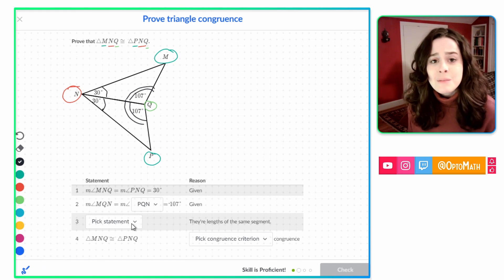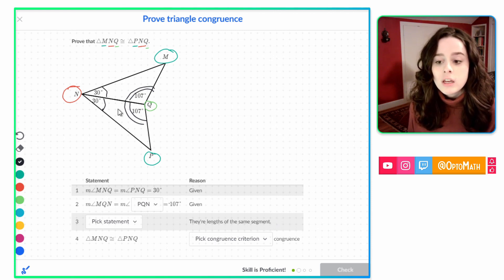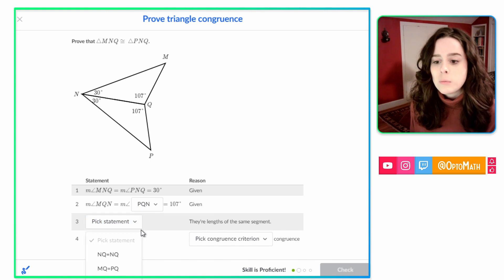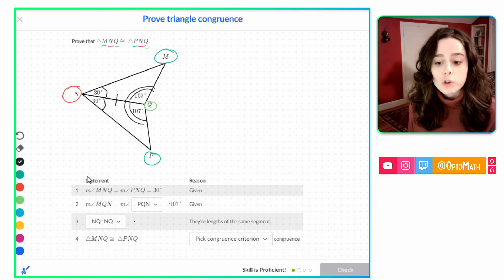And we want to pick the statement that tells that the links are the same segment. So which segment is congruent to itself? That's this segment here, that shared side. We will choose that, and that's going to be NQ is equal to NQ. So their lengths are equal.